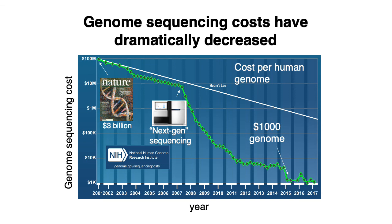These numbers are somewhat misleading because the cost of sequencing a genome depends on how deeply you sequence it — the deeper you sequence, the more it costs, but the more accurate your genome will be because you have more reads covering any given region. Overall, this graph illustrates that the cost of sequencing has just really rapidly declined.